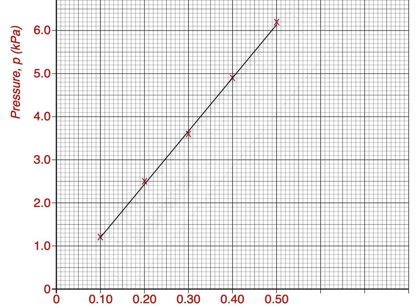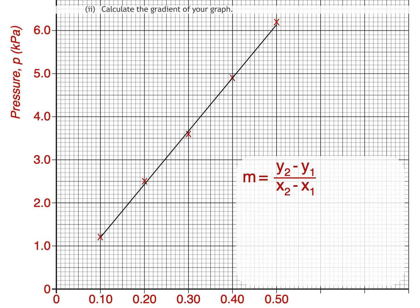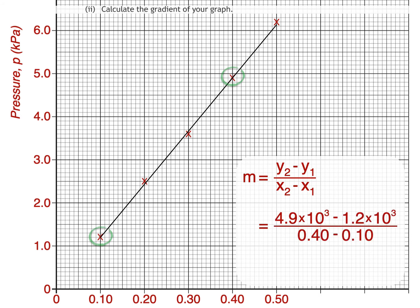That was b part one. Part two asks us to calculate the gradient of the graph. To do that we use this equation, but it's important to use two points on the best fit line — they don't necessarily need to be data points. We substitute the x and y values of the two points into the equation. Notice that I've substituted the y values — that's pressure — in pascals rather than kilopascals, because the pascal is the SI unit of pressure. That gives us an answer of 12,000 pascals per metre. The final answer was written to two significant figures, since it was calculated using pressure and depth values which were also written to two significant figures.